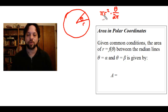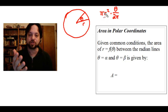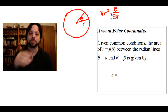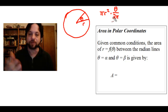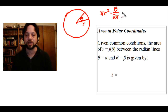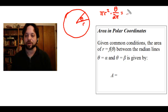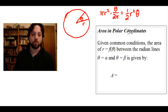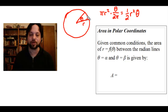So we have pi r squared, the area of the circle, multiplied by the fraction theta over 2π represented by the sector. If you do a little simplification, what we find is that this equals one half r squared theta. One half r squared theta is the area of this sector.